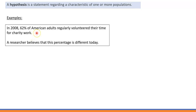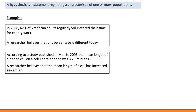The hypothesis statement here is that 62 percent of American adults regularly volunteered their time for charity work. According to a study published in March 2006, the mean length of a phone call on a cellular telephone was 3.25 minutes. A researcher believes that the mean length of a call has increased since then.